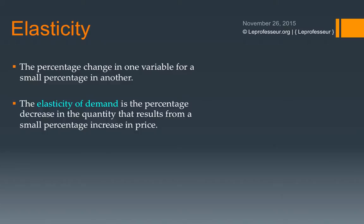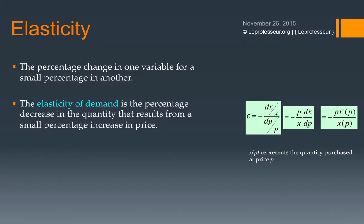The elasticity of demand is the percentage decrease in quantity that results from a small percentage increase in price. We represent elasticity of demand by the Greek letter epsilon. The formula involves dx, the change in quantity, and P, the price. A negative sign is included to make the elasticity positive, since demand decreases when price increases.